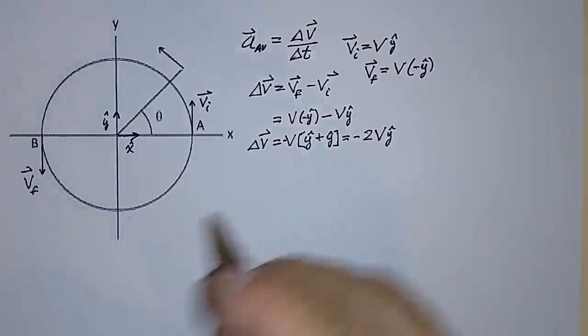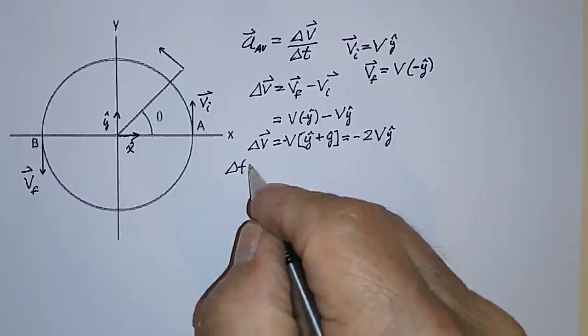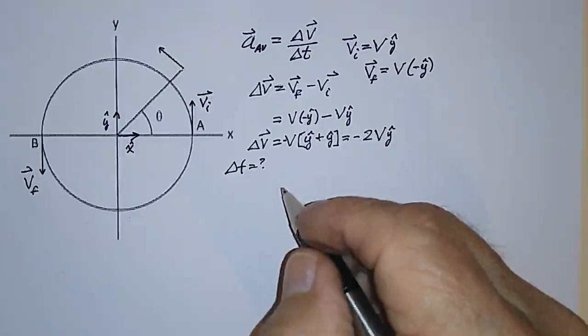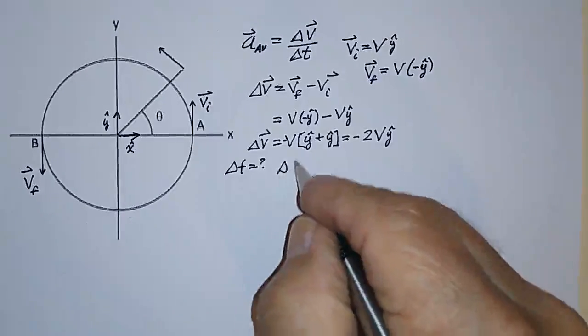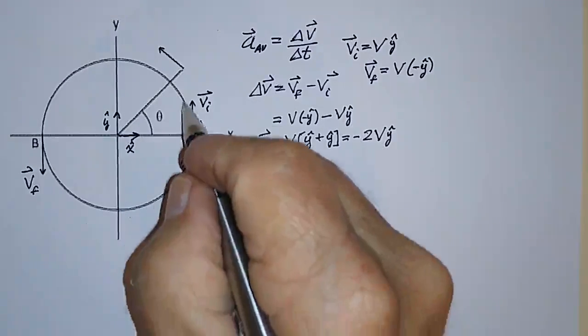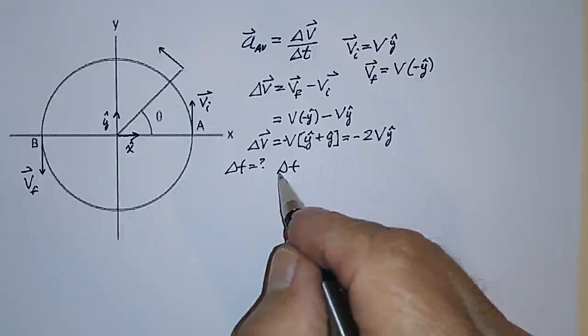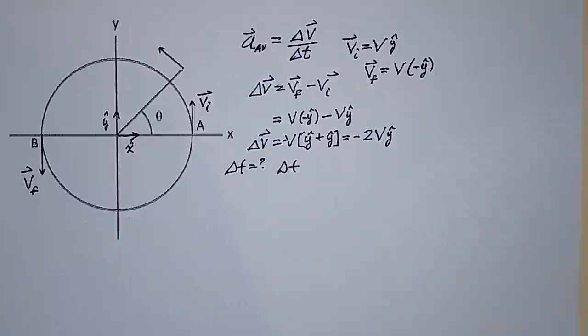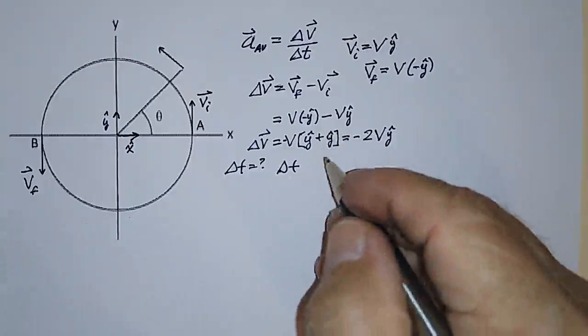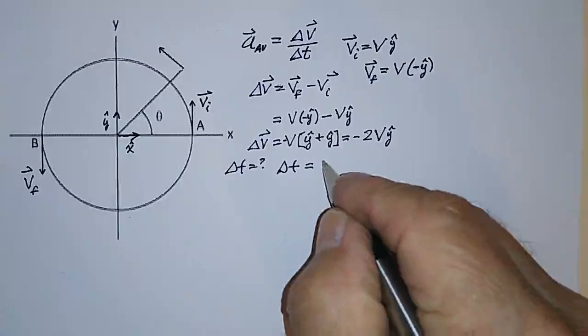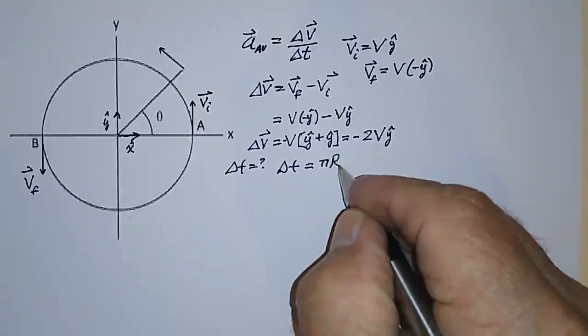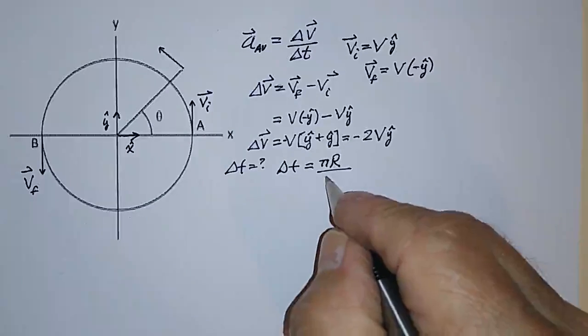Alright, how about delta T? What is delta T? Delta T is just equal to the distance, which is half of the circle, divided by the speed. Half of the circle is pi times R, divided by the speed V.